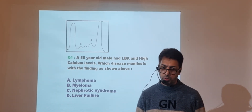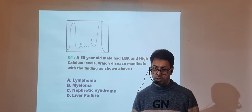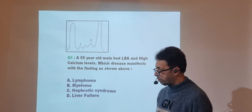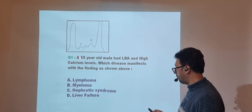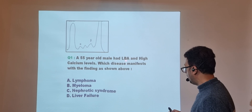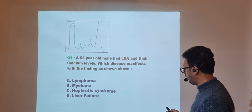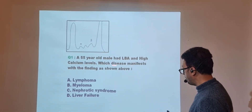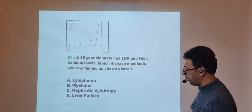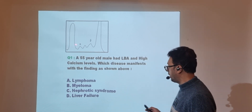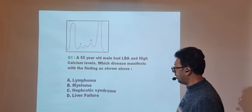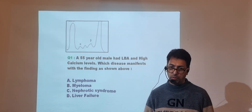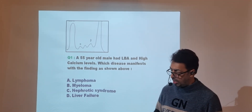This is an image-based question from pathology. A figure is placed. The case is a 55-year-old male with low backache and high calcium levels. The question asks: which disease manifested the finding as shown? You can see alpha, beta, and gamma bands, and what you can see is a gamma spike — an M-spike of the protein.